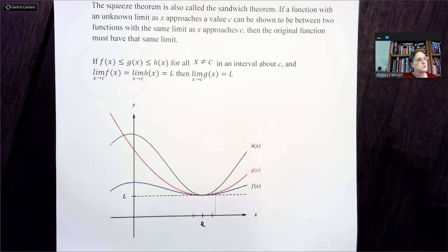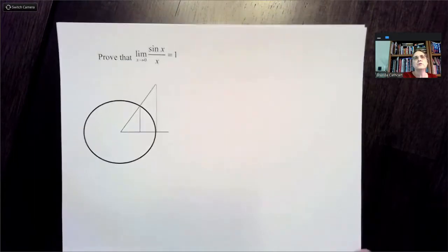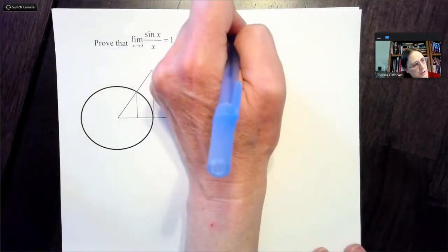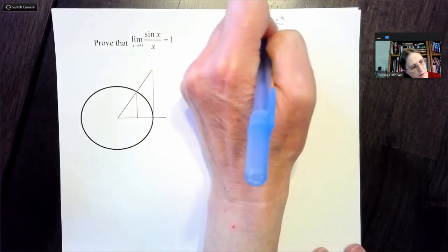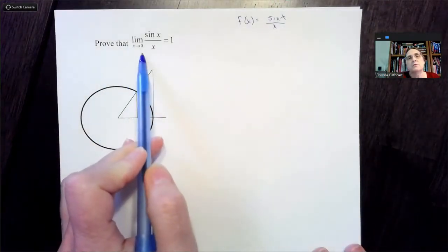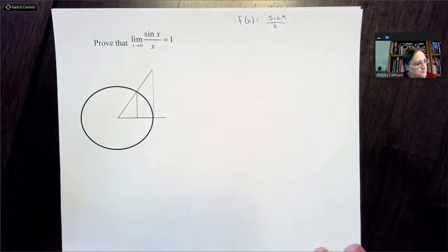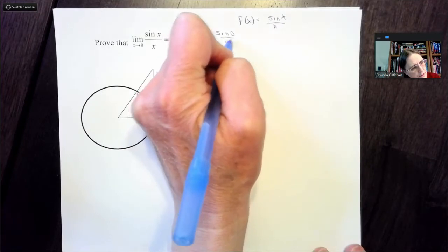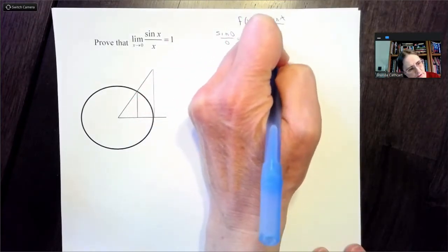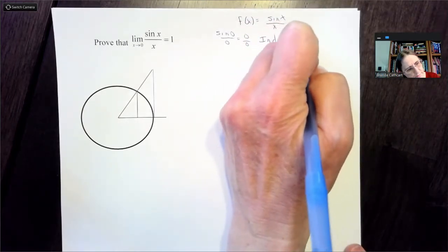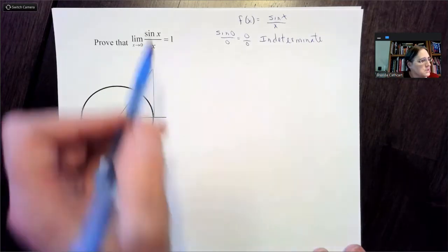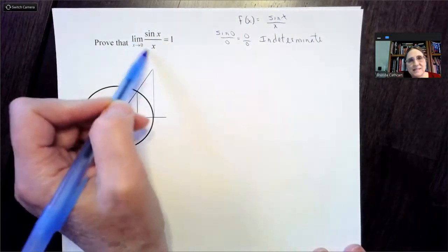We're going to use the results of this squeeze theorem to find the limit of a function we'll use over and over again in calculus. The function we're interested in is f(x) = sin(x)/x, and we want to prove that the limit as x approaches 0 of sin(x)/x is equal to 1. If we substitute 0 in for x we get sin(0)/0, which is 0/0 — indeterminate. So we need another way to evaluate this limit by finding two functions that sin(x)/x is sandwiched between.